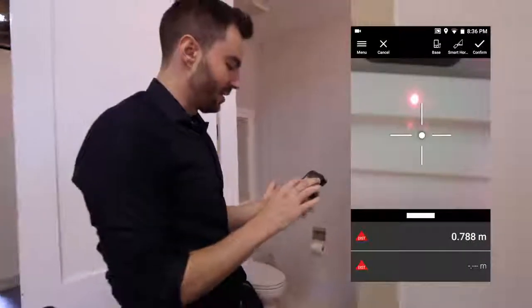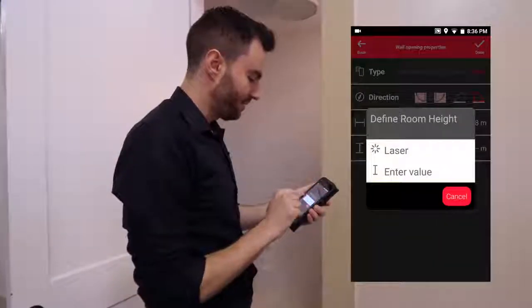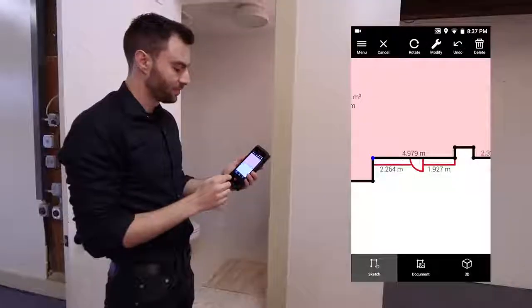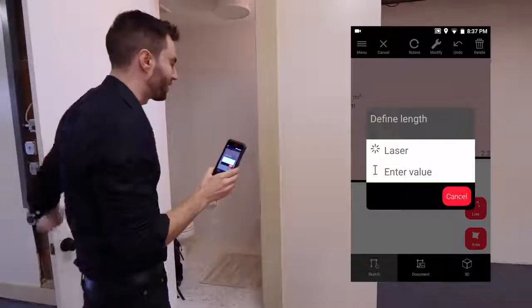If I'm good with that measurement, I can click confirm. Now I can measure the height of the door. And I'm going to confirm that measurement.